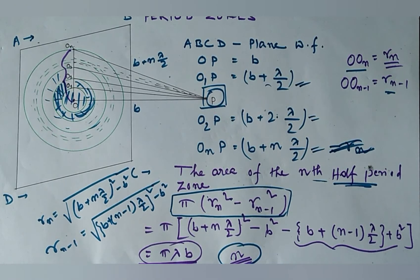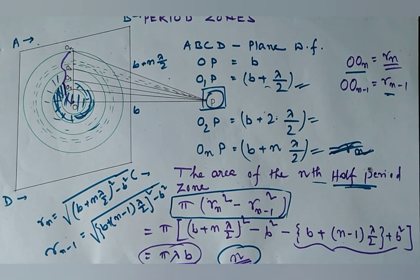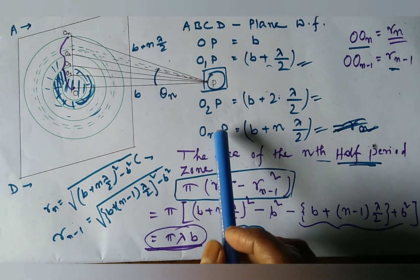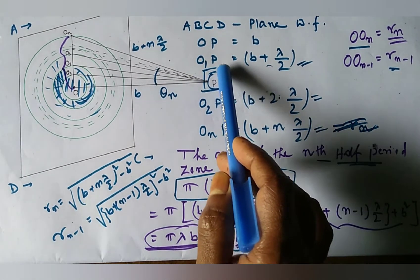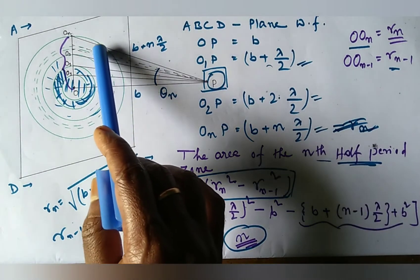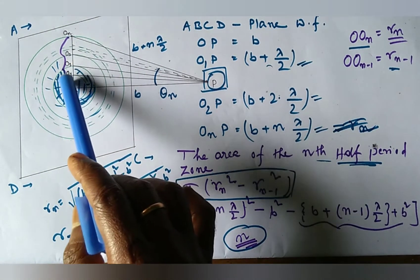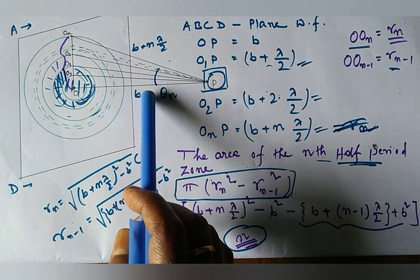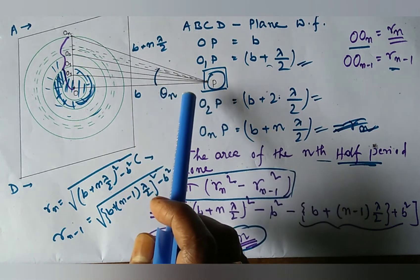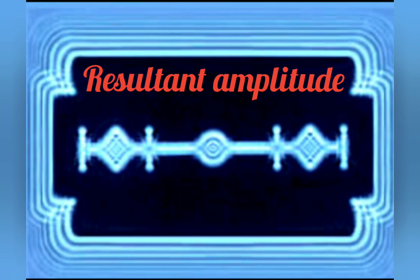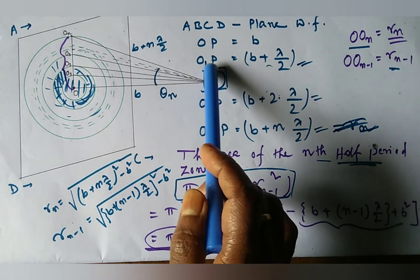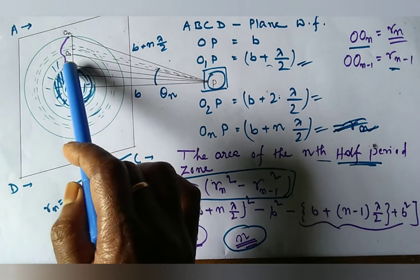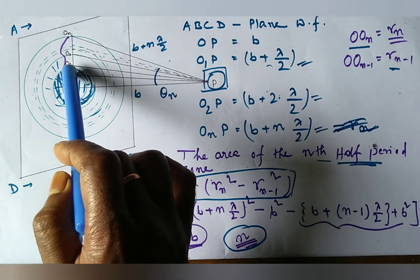But actually the area of the half-period zones increases as order number increases. Now, we show that the resultant amplitude at P due to all half-period zones is approximately half of the amplitude of the first half-period zone. The resultant amplitude at P will be the sum of the individual amplitudes due to each half-period zone.